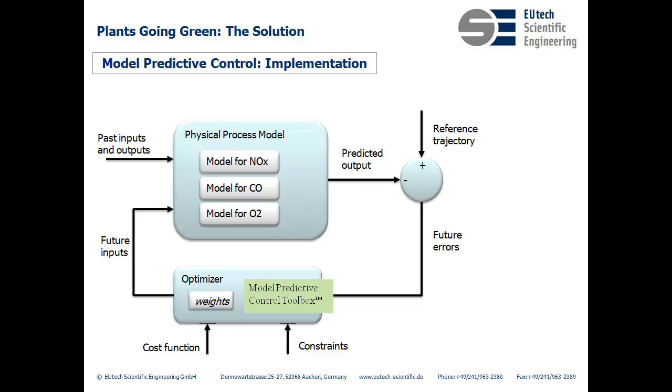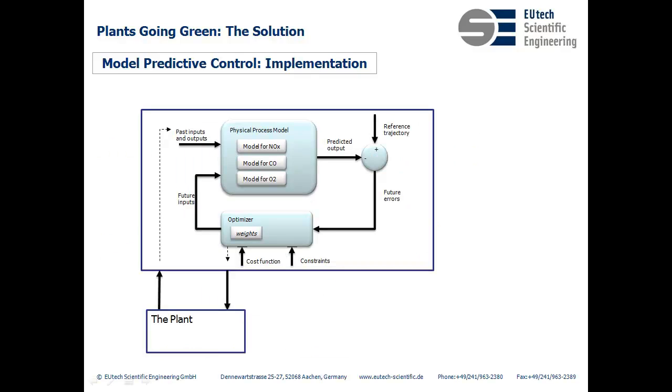Even though we calculated the values for the manipulated variables over the entire control horizon, we use the first value for this time step and repeat the whole process at the next time step. So here is again the big picture view. We get measured values for all of our variables from the power plant, calculate the manipulated variables using model predictive control for this time step, and then repeat the whole process at the next time step.